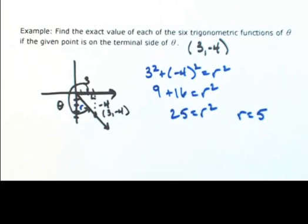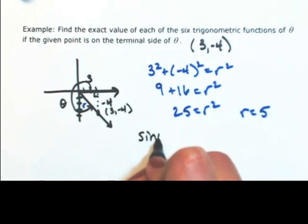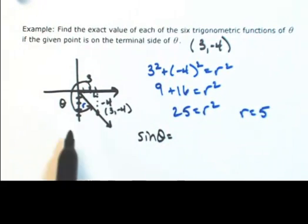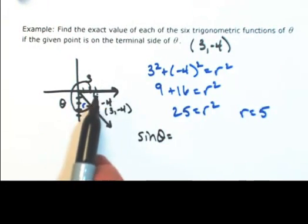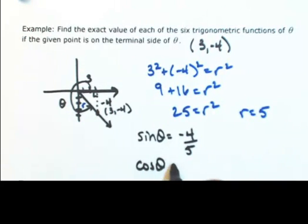So now that we have all the sides, we can find the six trig functions of theta. So the sine of theta, opposite over hypotenuse, in other words, negative 4 over 5. Cosine of theta, adjacent over hypotenuse.